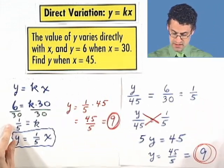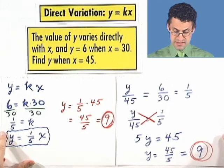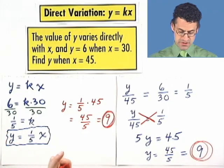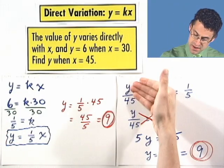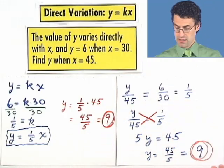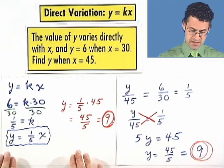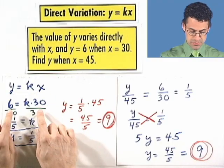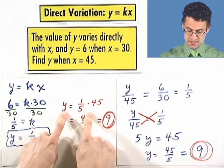So either method is going to lead to the answer of 9, and it's just a matter of how you like to think about this. Do you like to think about things as y is to 45 as 6 is to 30? That's great. Or do you like to think about things saying direct variation equals that, plug in values and find the k, and then solve. Either one is absolutely fine. You should pick the one that you like best. Direct variation. You can do it.